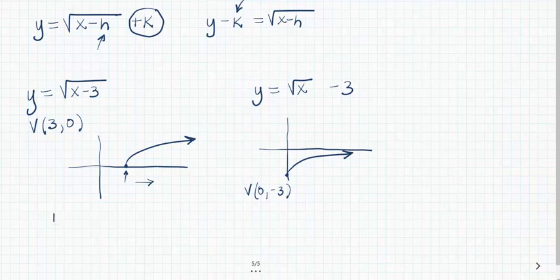So for the domain, we would say that x has to be greater than or equal to that vertex value. How about the range? Similarly, the y values start at the vertex and go up.